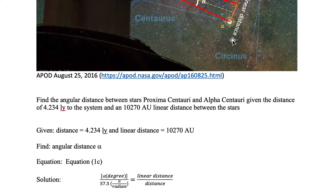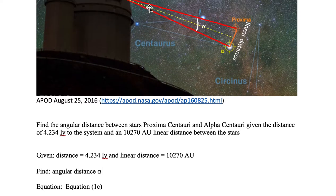And this equation 1c has its alpha angle expressed in degrees divided by the conversion of 57.3 degrees per radian. And that is equal to the linear distance, which is this orange line, divided by the distance, which is that yellow dash line up here.